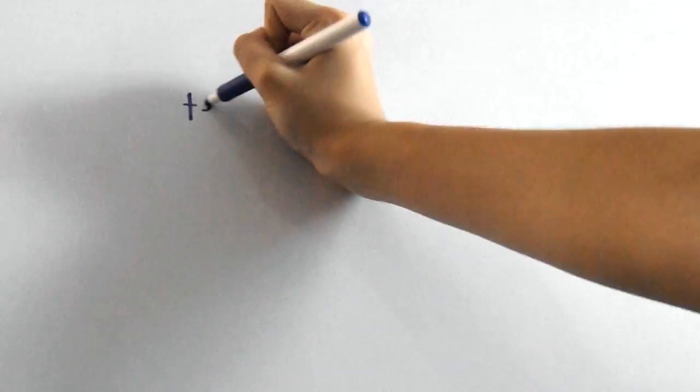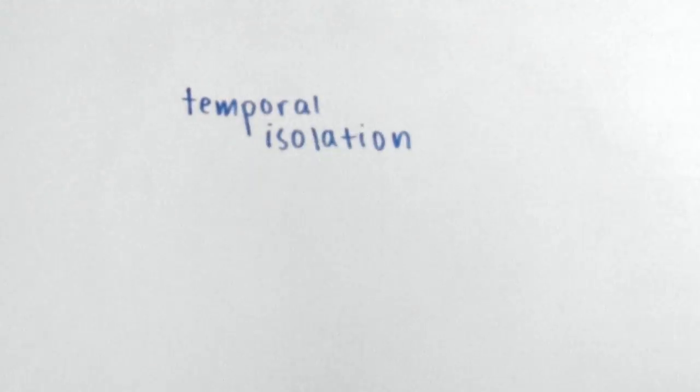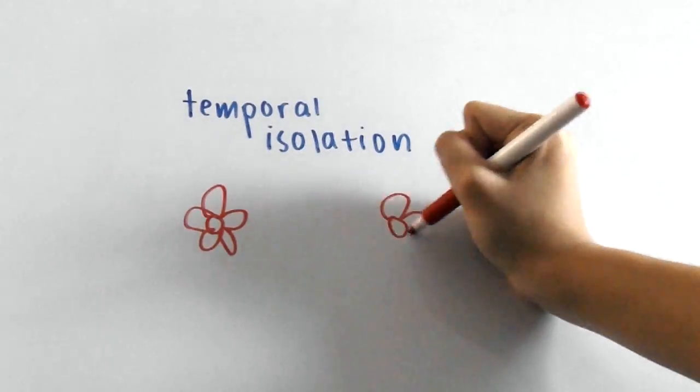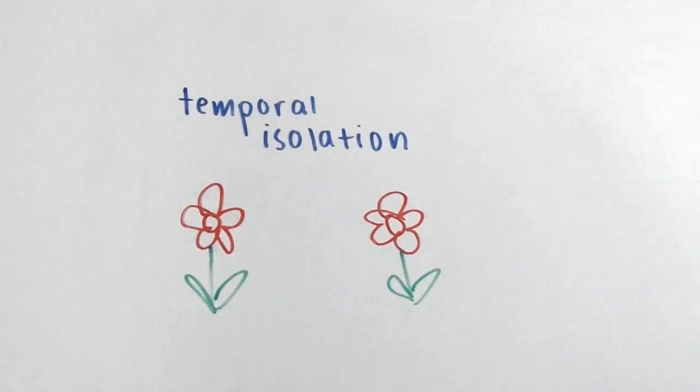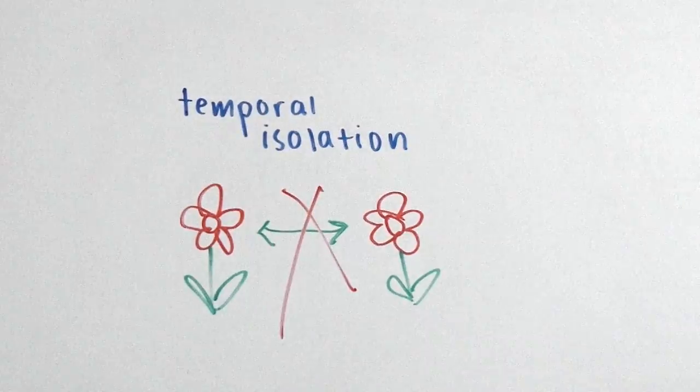Another one is called temporal isolation, and this is when species breed during different times. A flower may have a different time of pollination than another one, so the two different flowers can't mate.